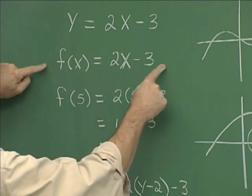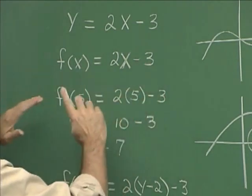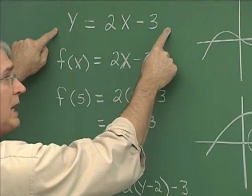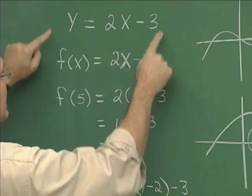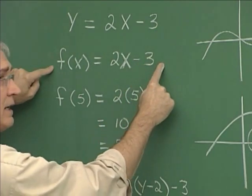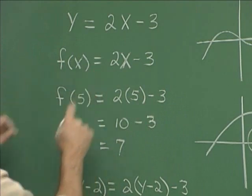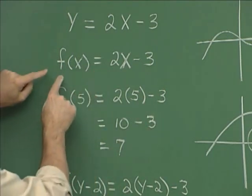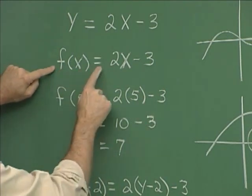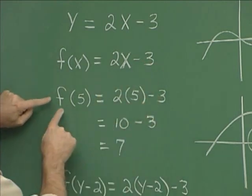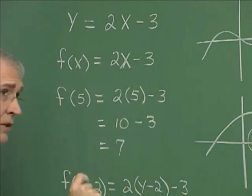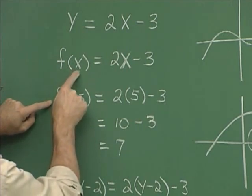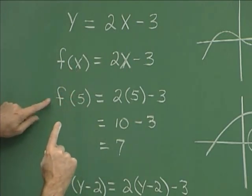This function notation can come directly from an equation like y equals 2x minus 3, and in fact these are interchangeable ideas. The function notation is often used in a circumstance like this: if f of x is equal to this expression, then f of 5 means in the f function replace x with 5 and evaluate.